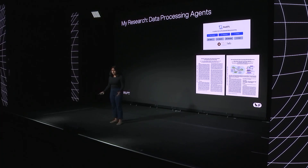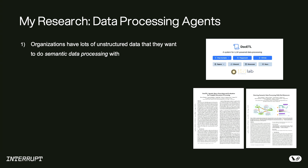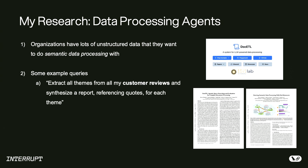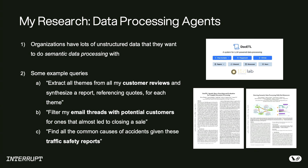To give a picture of the kind of research we do at Berkeley, this is around data processing agents. Organizations have lots of unstructured data — documents they want to extract insights from and make sense of. For example, in customer service reviews they might extract themes and summarize them. For a sales agent, which clients could have been closed and why. Domains like traffic safety and aviation safety also ask: what are the causes of accidents and how can we mitigate them?